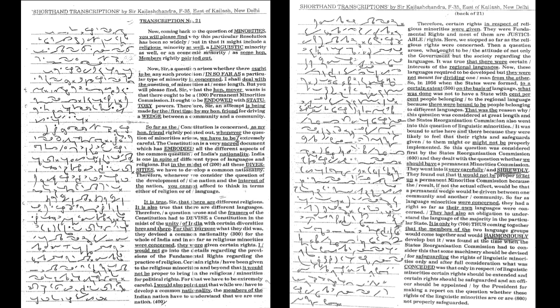It was bound to arise here and there because they were likely to feel that their rights and safeguards given to them might or might not be properly implemented. So, this question was considered first by the States Reorganization Commission and they dealt with the question whether we should have a permanent minorities commission.